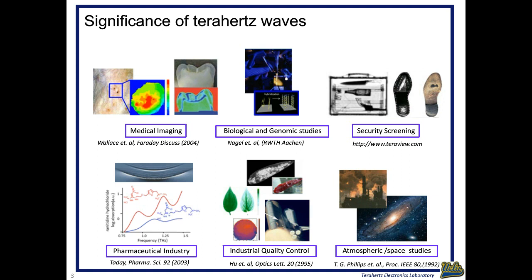However, operating at terahertz frequencies, we deal with a tradeoff in the resolution of the image we get. Also, because of having a lot of water in biological and human tissue, the penetration depths of terahertz waves in the tissue are limited. However, because of the wavelength range we are dealing with, penetration depths in the tissue are still more than in optical regimes. So you can potentially see deeper cancerous or other types of abnormalities in human tissue.